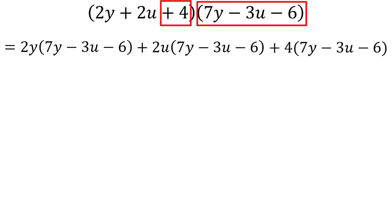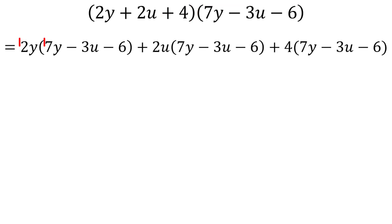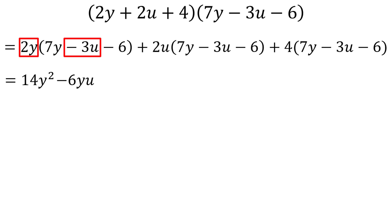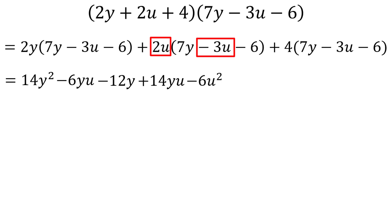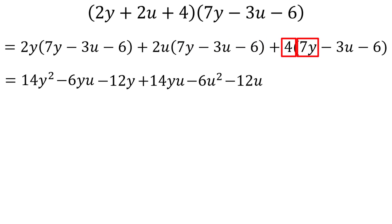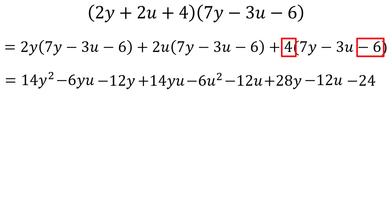2y times 7y is 14y squared. 2y times negative 3u is negative 6yu. 2y times negative 6 is negative 12y. 2u times 7y is 14yu. 2u times negative 3u is negative 6u squared. 2u times negative 6 is negative 12u. 4 times 7y is 28y. 4 times negative 3u is negative 12u. 4 times negative 6 is negative 24.